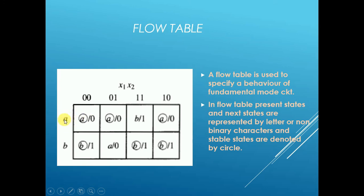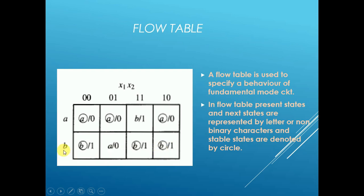In the flow table, present states and next states are represented by letters or non-binary characters, and stable states are denoted by a circle. For example, if the present state is 'a' and the next state is also 'a,' you encircle it to show it is stable. Where the present state equals 'b' and the next state is 'b,' those are also encircled. You only encircle states where the present state equals the next state.